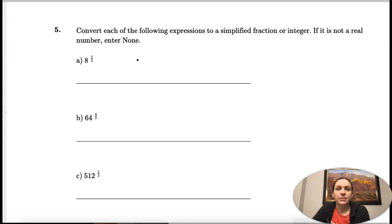Number five, convert each of the following expressions to a simplified fraction or integer. If not a real number, enter none. So when I ask for an integer, this is a counting number, like one, two, three, four. So we're going to get a nice number for this.